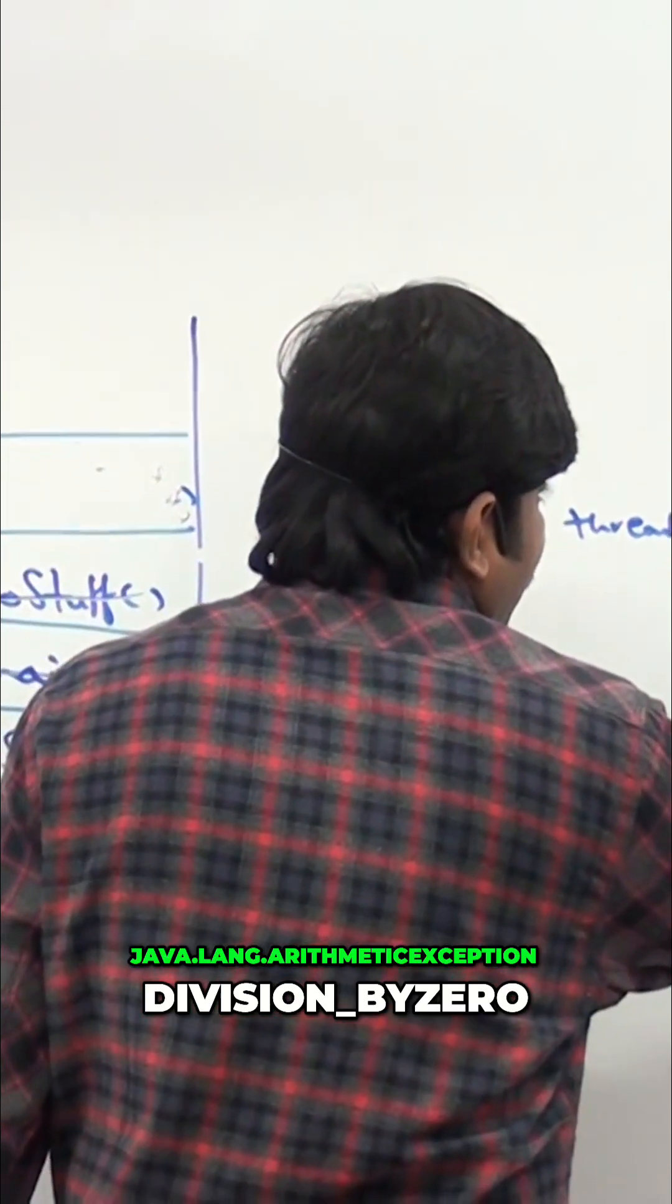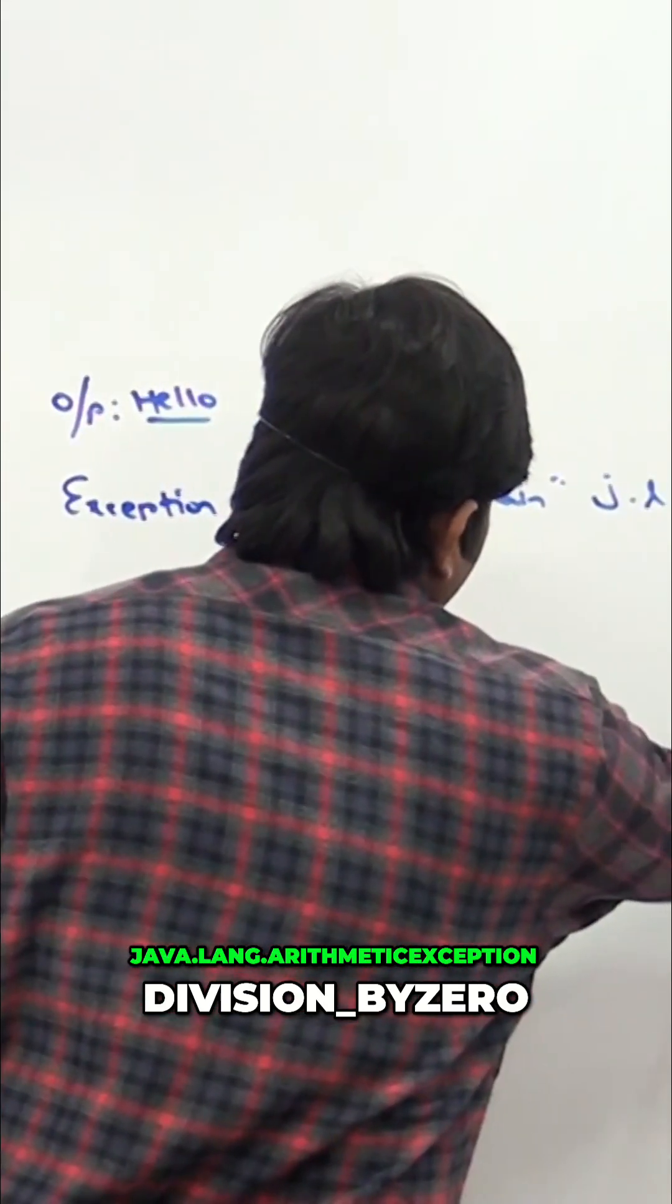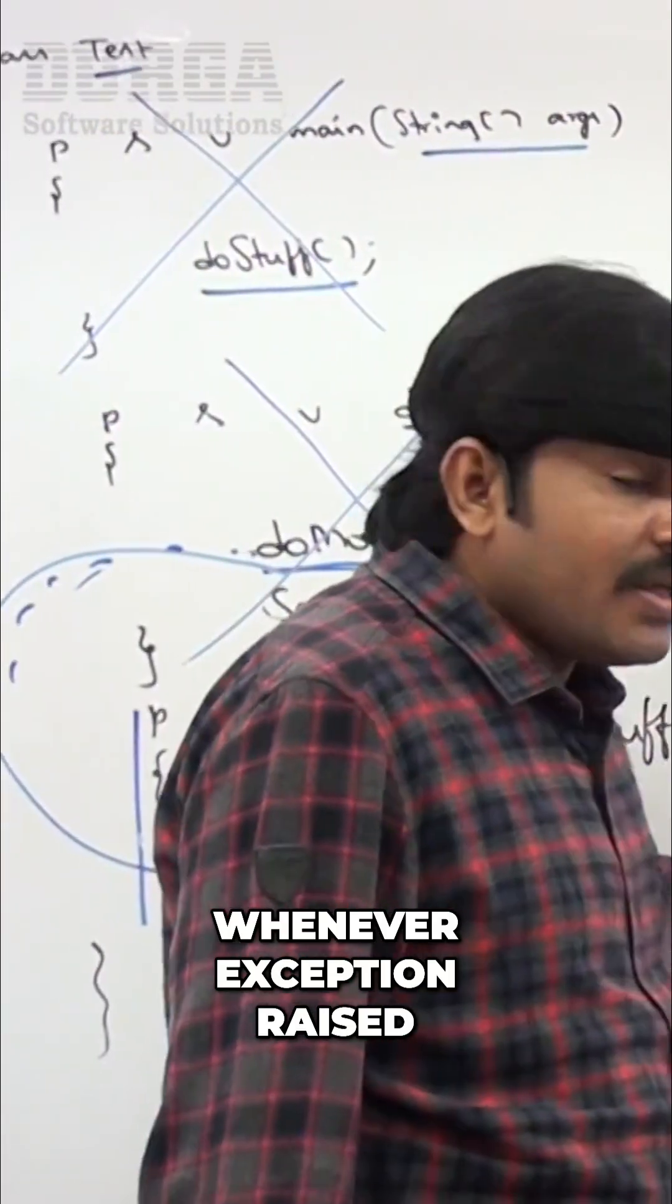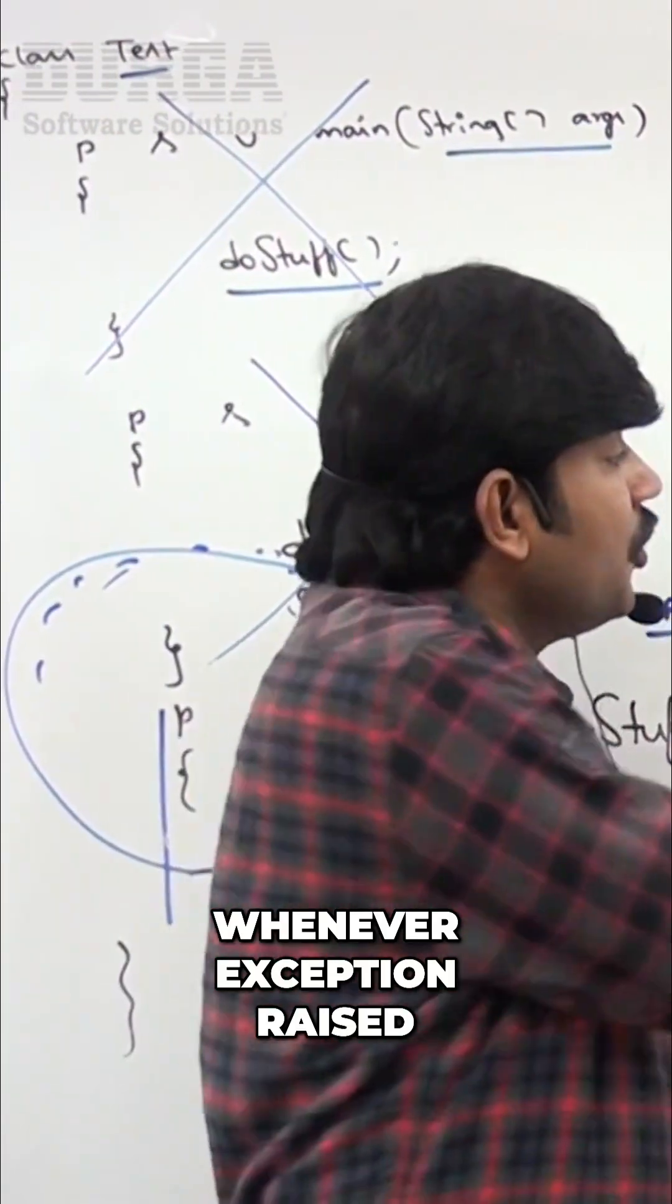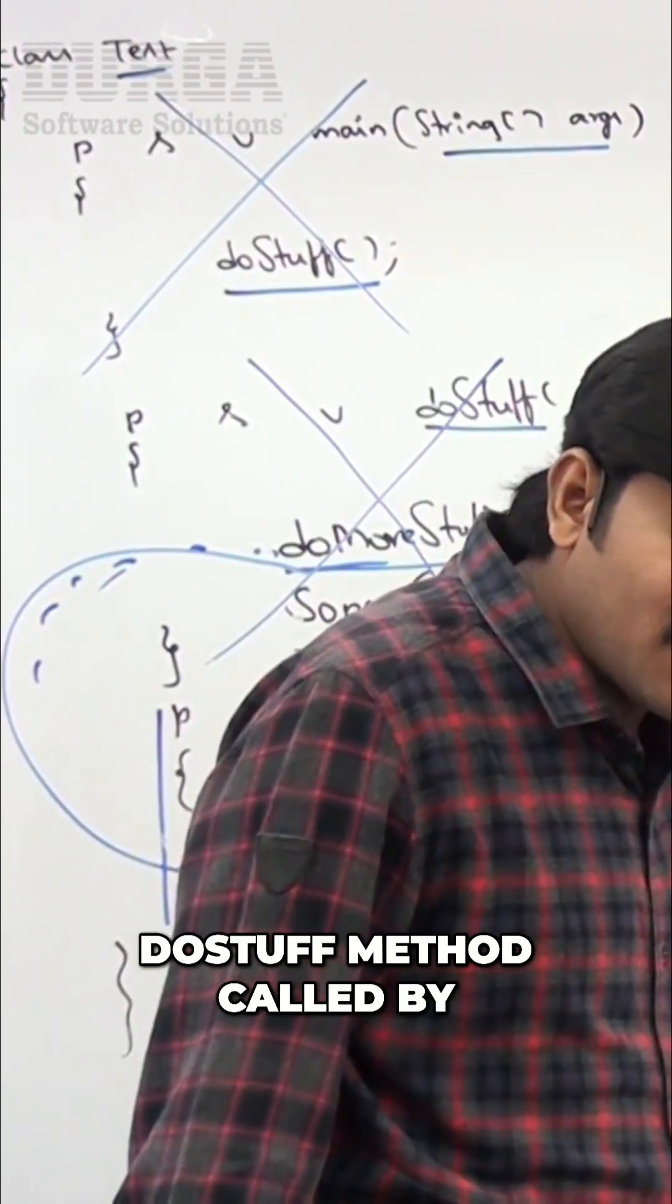Please confirm: java.lang.ArithmeticException: division by zero. Whenever an exception is raised, in which method is it raised? At the doStuff method. The doStuff method is called by which one?